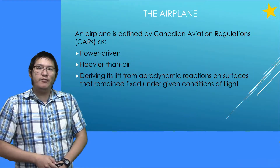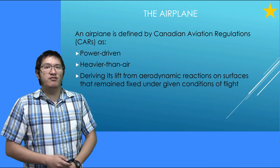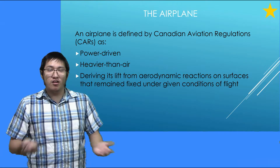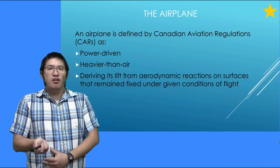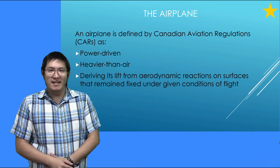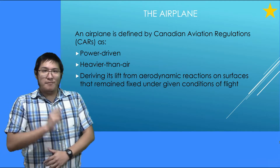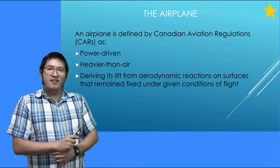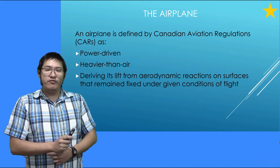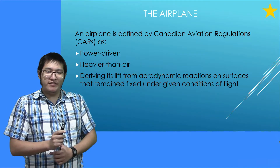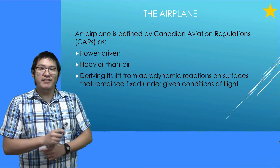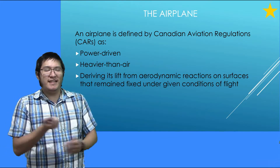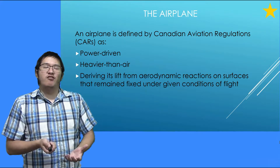But first of all, we have to discuss what is an airplane. An airplane is defined by the Canadian Aviation Regulations, or CARS for short, which is the law that governs aviation in Canada. According to those, an airplane is defined as power-driven, heavier than air, and deriving its lift from aerodynamic reactions on surfaces that remain fixed under given conditions of flight. In plain English, it's a fixed-wing aircraft.